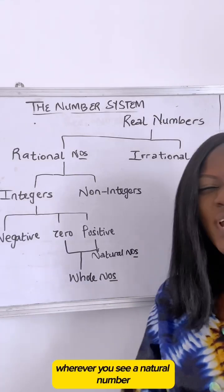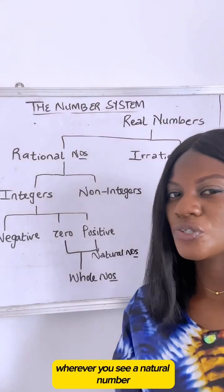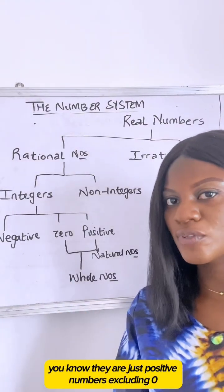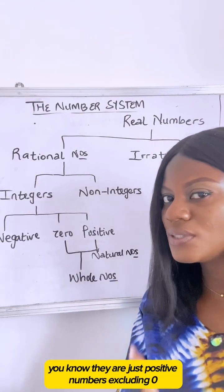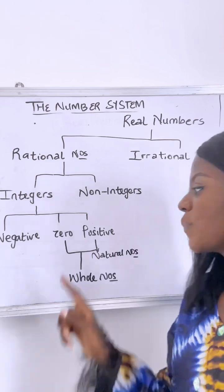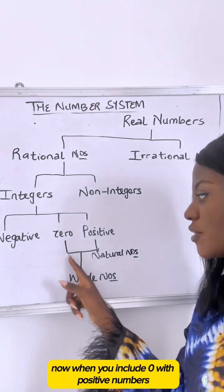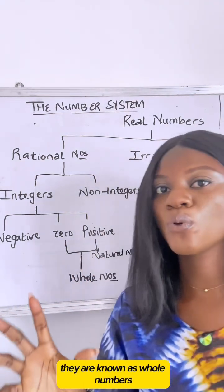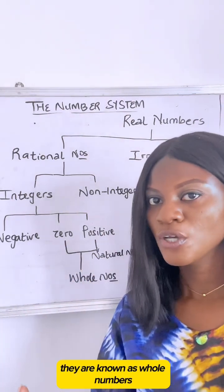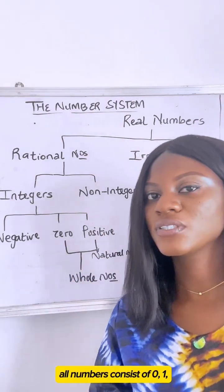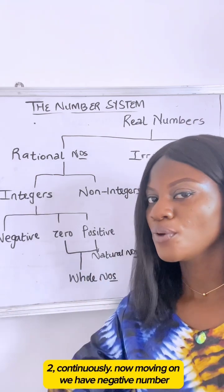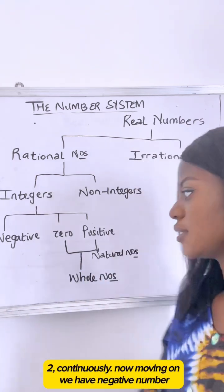Natural numbers are just positive numbers excluding zero. Now when you include zero with positive numbers, they are known as whole numbers. So whole numbers consist of zero, one, two, and continue from there.